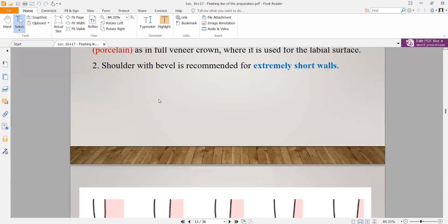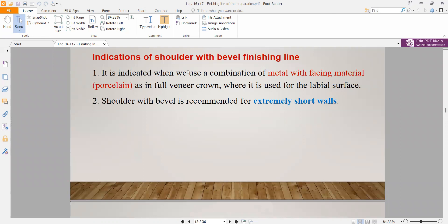The indications for when we use it: it's used in combination of metal with facing material porcelain, as in full veneer crown where it's used on the labial surface. Some veneer types have the tooth generally made of metal, but for example the labial or facial surface is made of porcelain. We use it in these cases - shoulder with bevel on the labial surface that's made of porcelain.